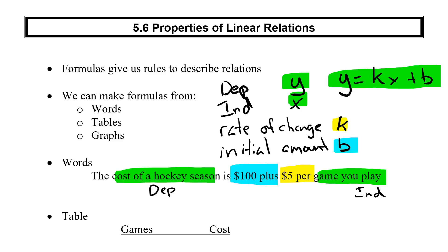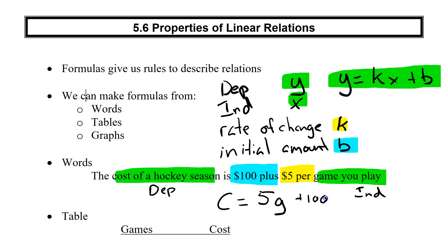So I can now put this into my formula y equals kx plus b. The cost of the hockey season I'll call c, is going to be my rate of change — which is 5 — times my independent variable, the number of games (we'll call that g), plus my initial amount which is 100. So my formula becomes: cost equals 5 times every game I play, plus $100. We could solve this further — say if we play 10 games, just substitute g equals 10 and push it through.